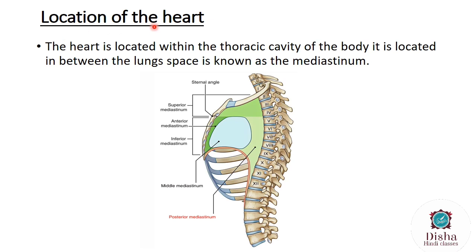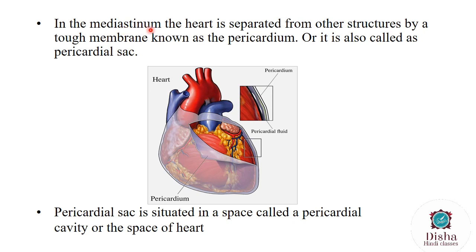From now we will be looking at the location of the heart. The heart is located within the thoracic cavity of the body. If the heart is situated between the lungs, that space is called the mediastinum, where the heart will be located. In the mediastinum, the heart is separated from other structures by a tough membrane called the pericardium, also called the pericardial sac, because the heart is situated within this sac. The pericardial sac is situated in a space called the pericardial cavity, also called the space of the heart.